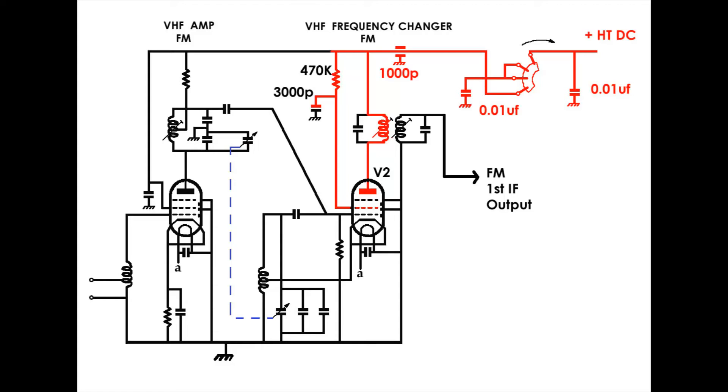Moving on again to the left, the anode of V1 is fed via that 1K resistor and one half of the intervalve transformer above it. Again, V1's screen grid is decoupled with the 3000 pF capacitor.